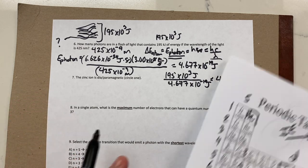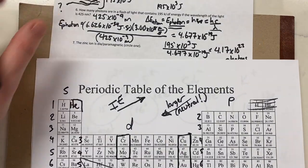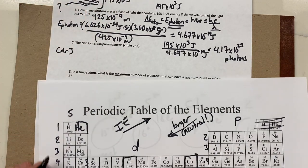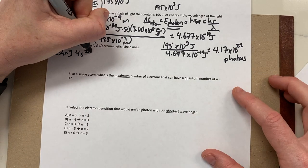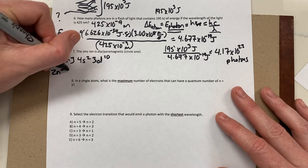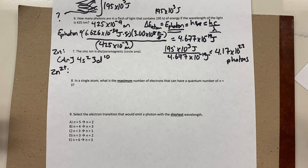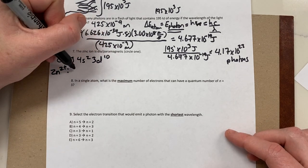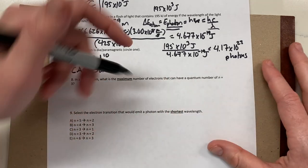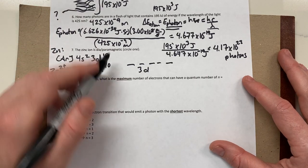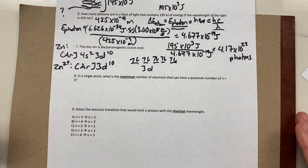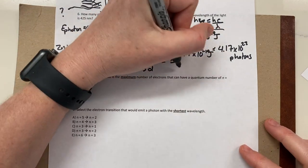Next question: is the zinc ion diamagnetic or paramagnetic? First look at neutral zinc: its configuration is [Ar] 4s2 3d10. Since zinc loses two electrons and it's a transition metal, we remove from the s block first, giving Zn²⁺ the configuration [Ar] 3d10. Drawing out those 10 valence electrons, all five d orbitals are fully paired. No unpaired electrons means it is diamagnetic.